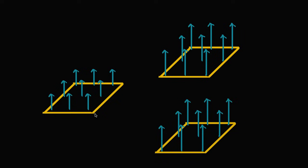Here I've depicted a square loop of a conductor — a wire — that is stationary and sitting in a magnetic field. I've drawn a few vectors representing the magnetic field, and you can see that on the surface contoured by the wire, the magnetic field looks constant. So if we just had this scenario, nothing too special is going on.